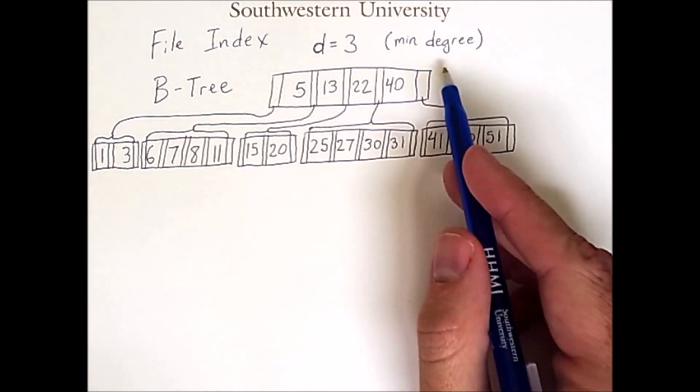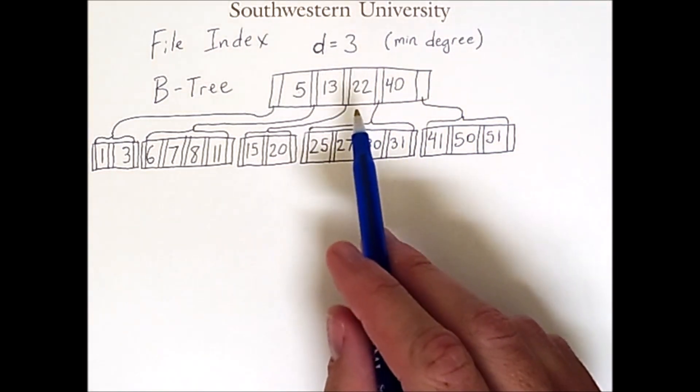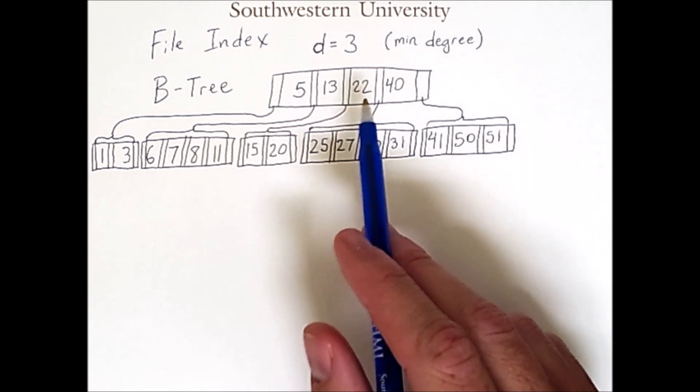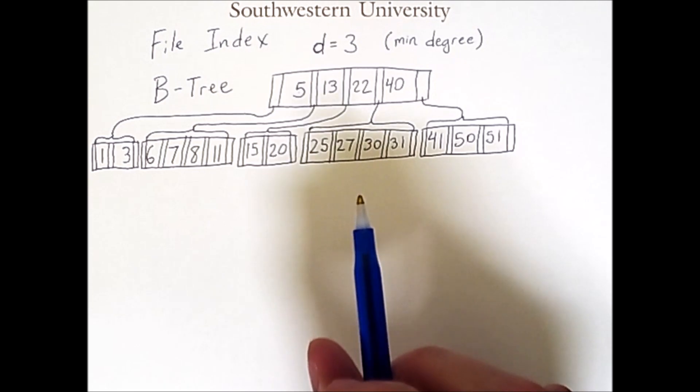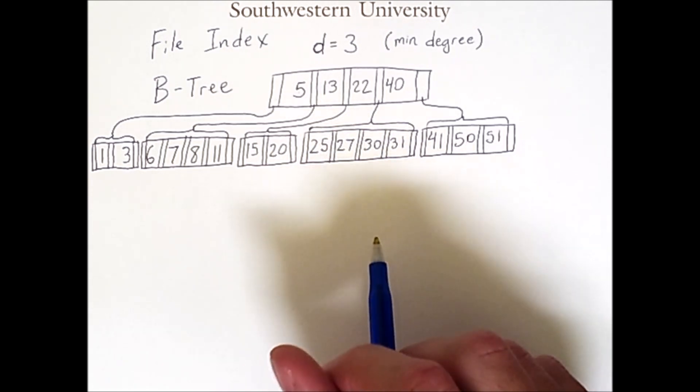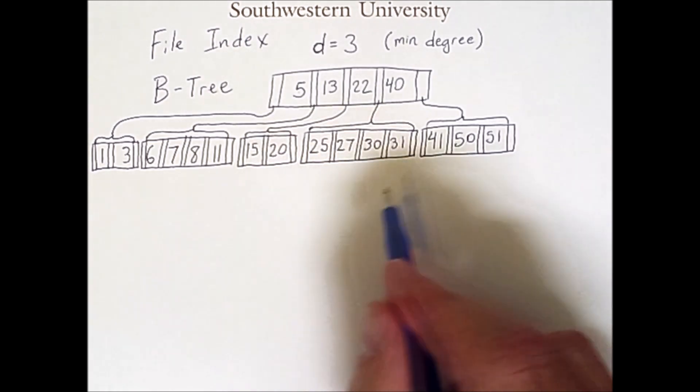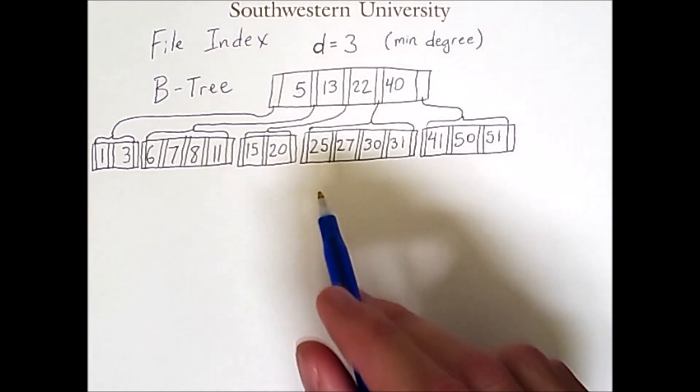It actually has room for one more. The one exception to the min degree rule is the root node. The root node can have a degree smaller than this. It does not in this example, but it will as we work on this tree, and you'll see why we need to allow this exception for the root node.